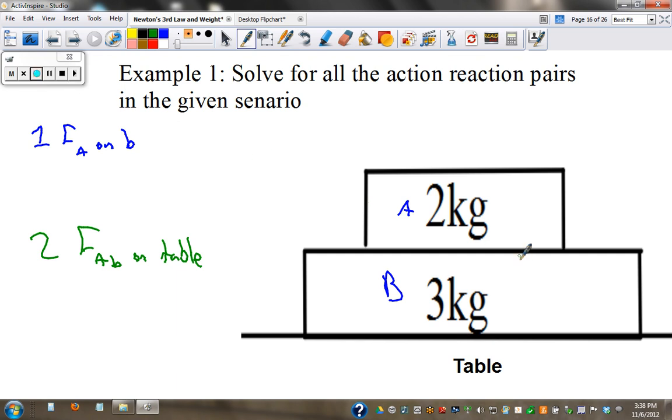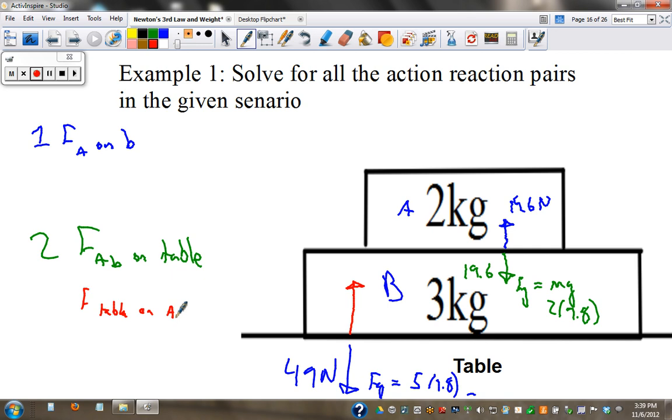The answer: A on B, Fg equals mg, 2 times 9.8, that's 19.6. So that means the reaction force, the normal force from B on A is also 19.6 newtons. For both of them on the table, we have Fg equals 5 times 9.8 equals 49 newtons. So that means the reaction normal force from the table on A and B, F table on A and B, also has to be 49 newtons.